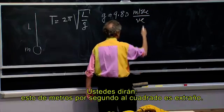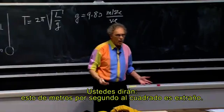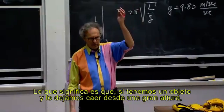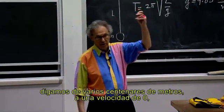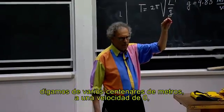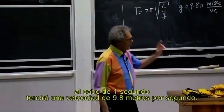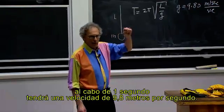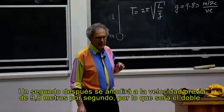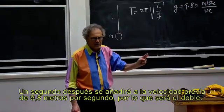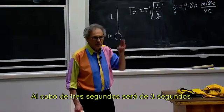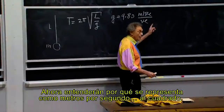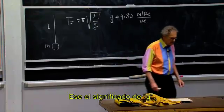You will say, well, that's weird — meters per second per second. What that means is that if you have an object and you drop it from a very large altitude, a few hundred meters high, and I dropped it at zero speed, after one second it will have a speed of 9.8 meters per second. But after another second it will add another 9.8 meters per second, so it's twice that. After three seconds it's three times that. So now you understand why it is meters per second per second. That's the meaning of G.